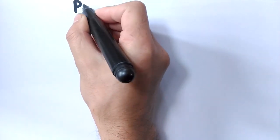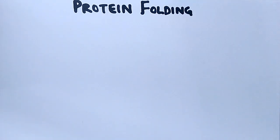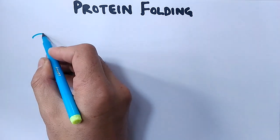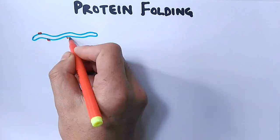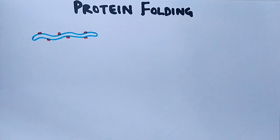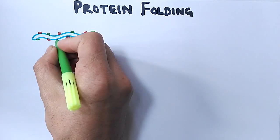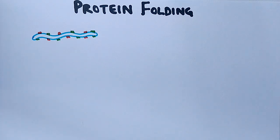In this video we will be discussing protein folding, one of the important biological processes that makes protein functional. If protein folding does not occur, the protein is rendered non-functional, and sometimes it causes lethal diseases — for example, when proteins become prions, which have been discussed in a linked video.